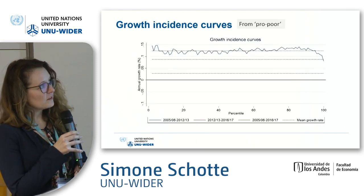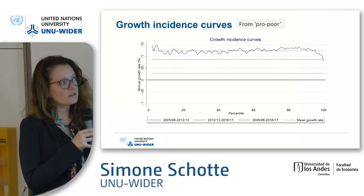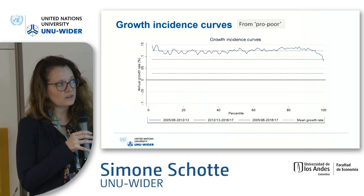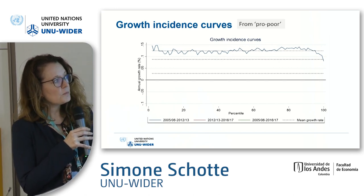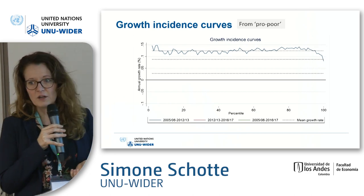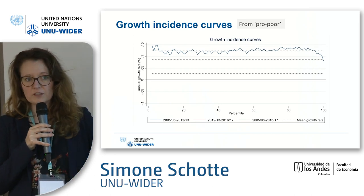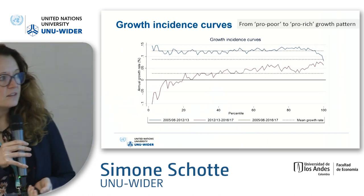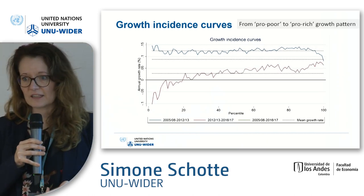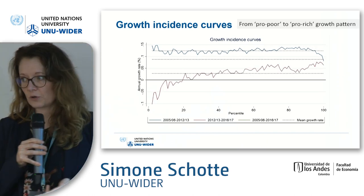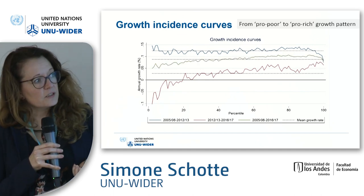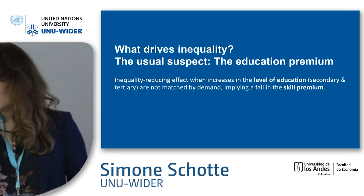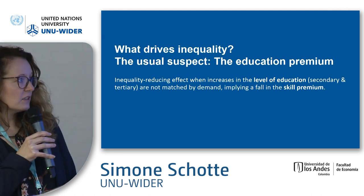Looking at the growth incidence curve: for the first period from 2005 to 2012, you see a slight pro-poor pattern — growth rates were larger at the bottom of the distribution and lowest at the top. This changed quite dramatically in the second period, where you have a clear pro-rich pattern. As Kunal introduced, the main question we are trying to answer is what drives inequality.